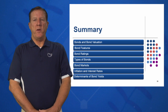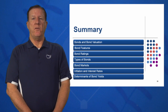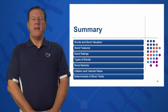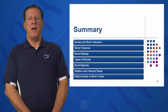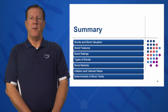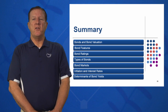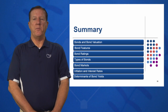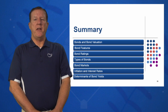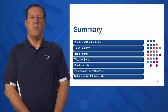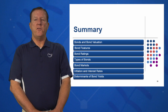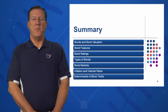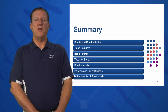In summary, in session seven we looked at seven learning objectives: how to value a bond using the bond valuation equation; key features of bonds and what makes up a bond; who rates bonds; the various types of bonds you may encounter; where to buy bonds; how inflation and interest rates affect bond prices using the Fisher effect; and what determines bond yield — the key determinants. I hope you've enjoyed session seven of Introduction to Finance.